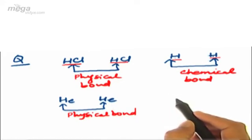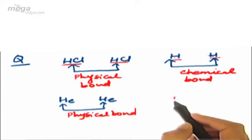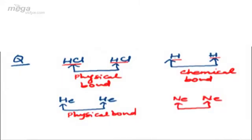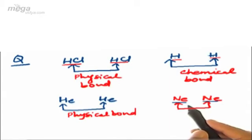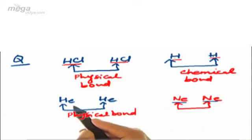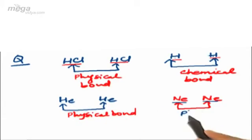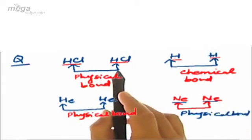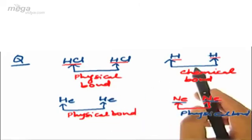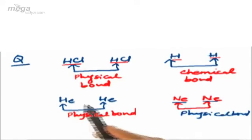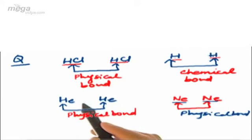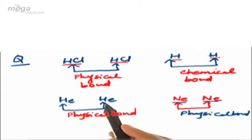Moving ahead, if we discuss what shall be the nature of bonding between neon and neon — here both neon atoms are in their atomic state, but neon belongs to the inert gas family, the zero group, where elements have an inert gas configuration. So, similar to helium, neon will also possess physical bonding. To summarize: if two species are in their molecular state they undergo physical bonding; if they are in their atomic state they undergo chemical bonding; and if they are in the atomic state but are inert gases, they undergo physical bonding due to stable configuration.